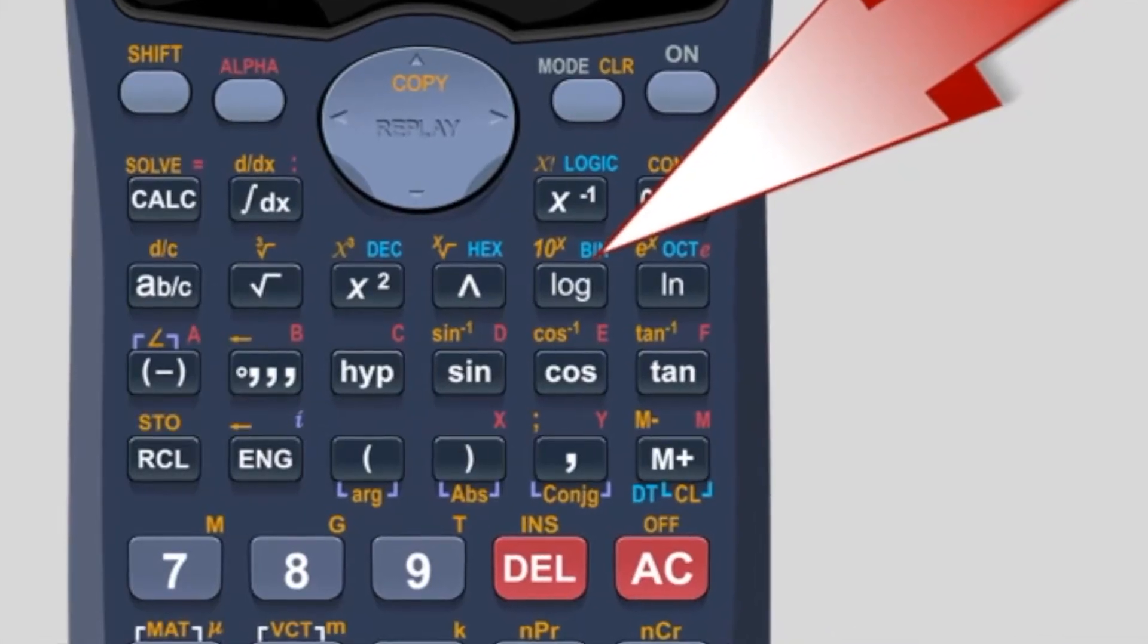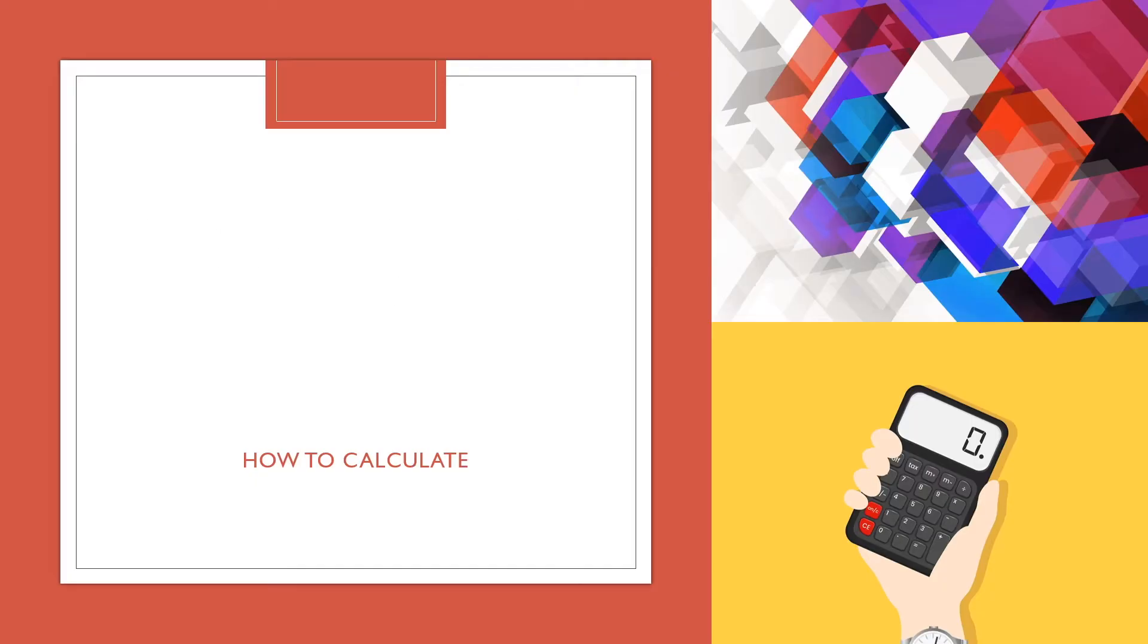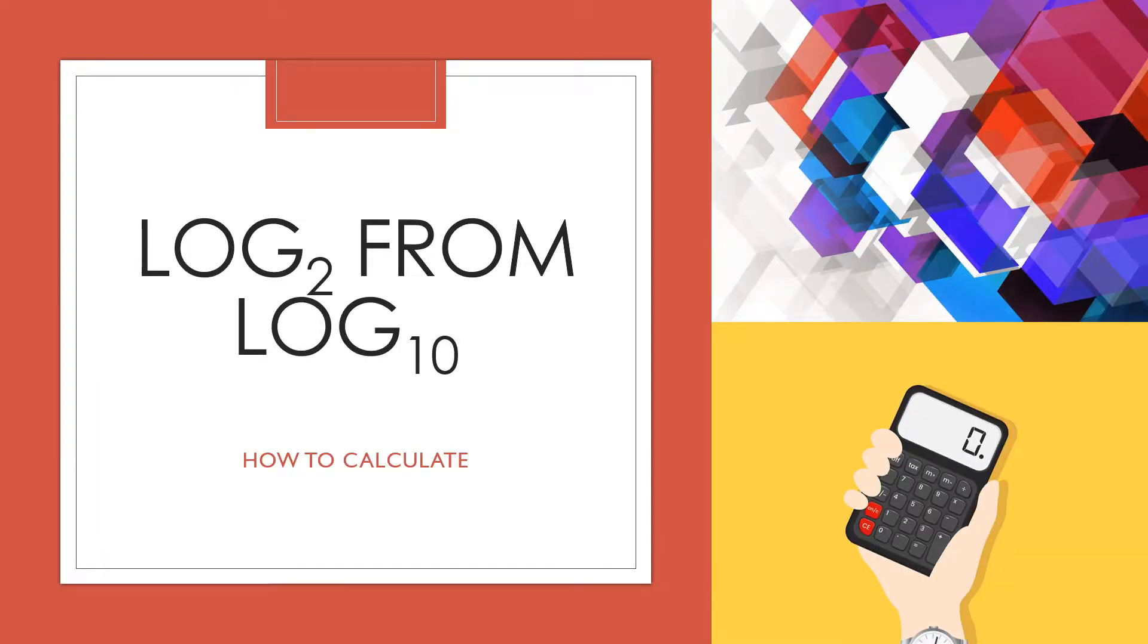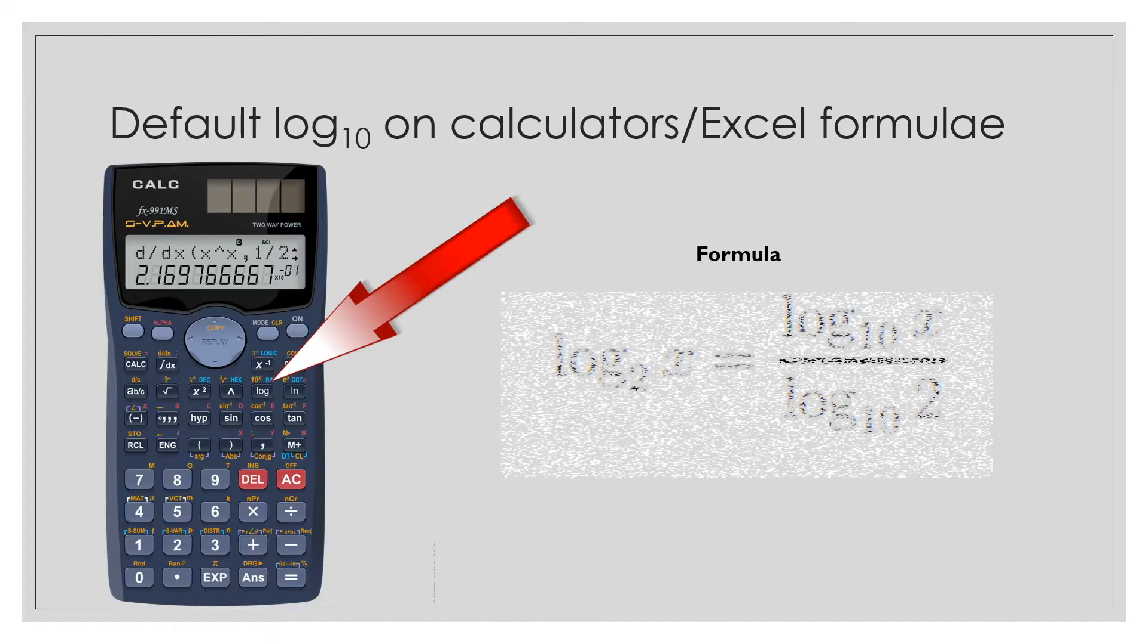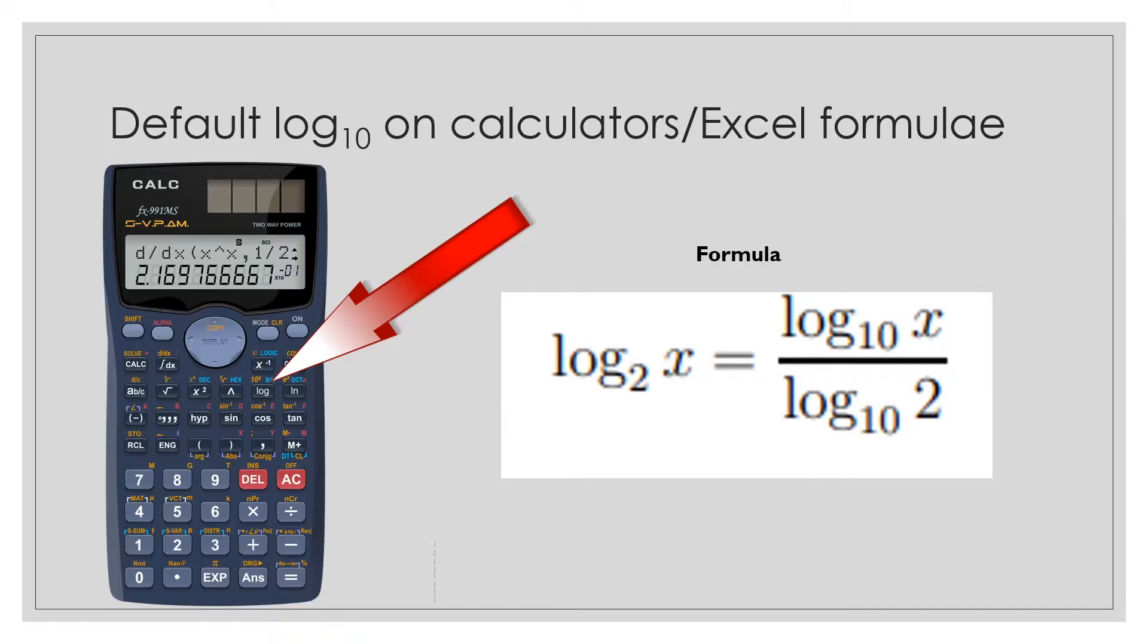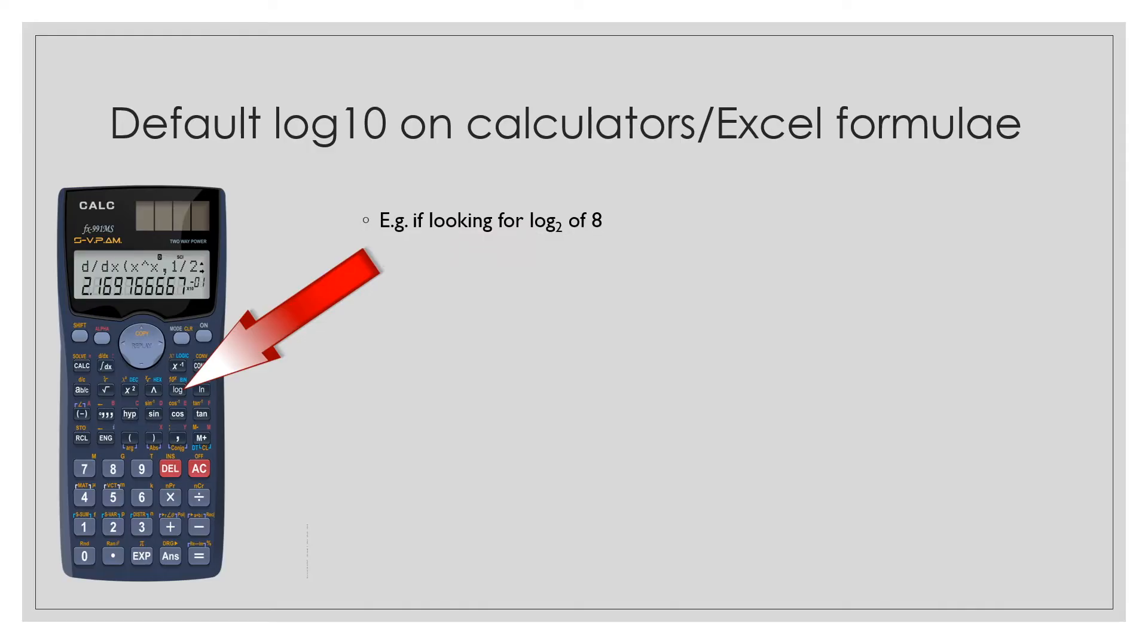So how do you actually get a log2 transformation? Let's take a look at how you would do it on your calculator or in Excel. The process is very simple. You simply have to divide your log10 value for the number that you are looking at by the log10 to 2 value. So in this example, if we want to get a log2 value for 8, what we do is initially put in the log button on the calculator and we put 8, and we know that it's giving us the log10 value. But we want the log2 value.